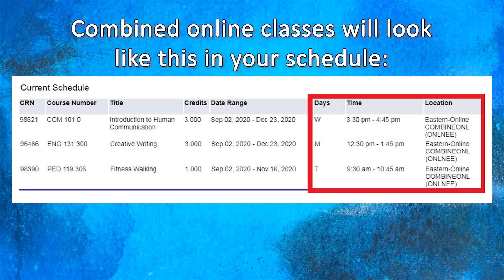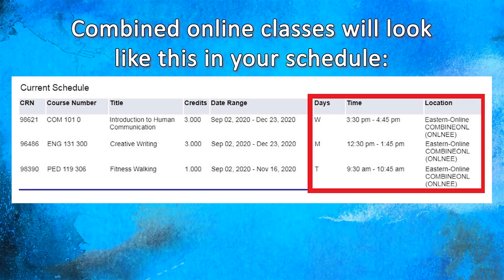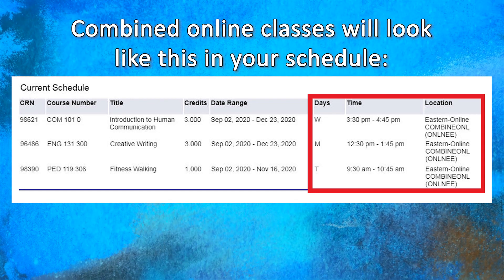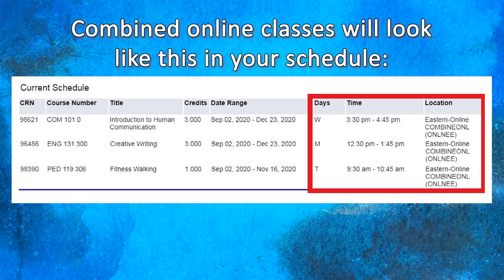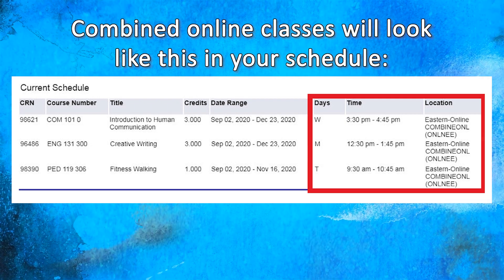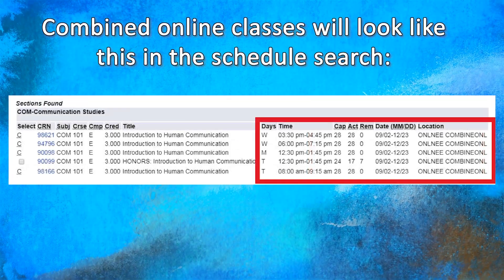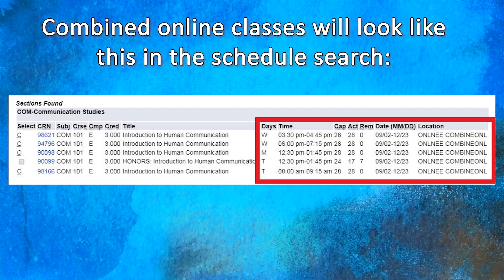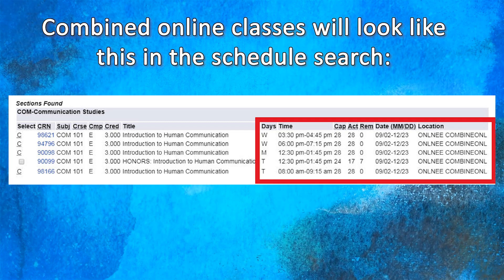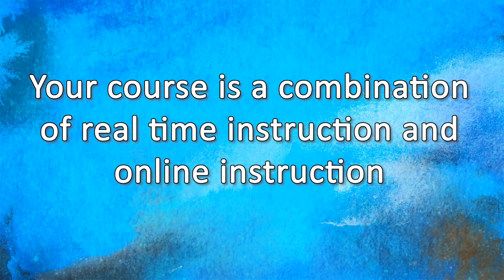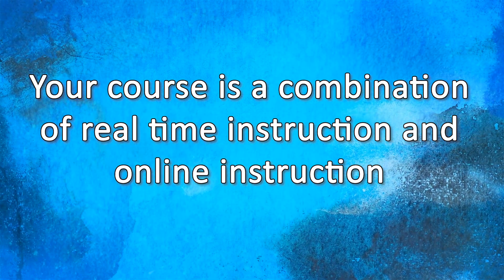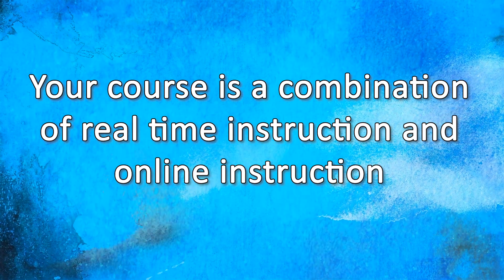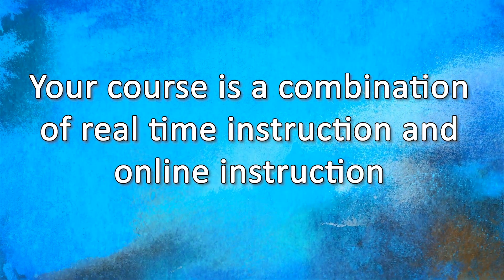If your class is designated as combined online, your schedule will look like this. 50% of your combined online classes will be taught in an online modality, requiring you to participate in activities and complete assignments on your own time while meeting course due dates throughout the semester. 50% of the course will be taught in the real-time online modality, requiring you to meet at scheduled meeting times with your instructor, as listed in your schedule.